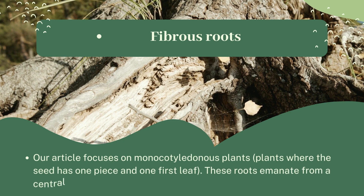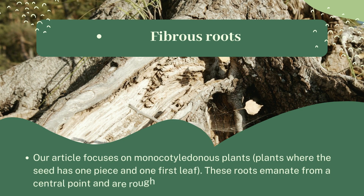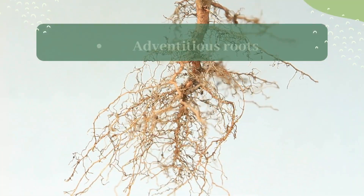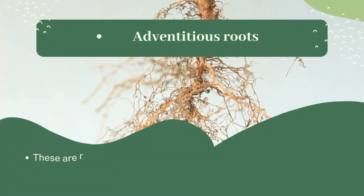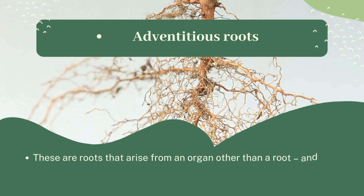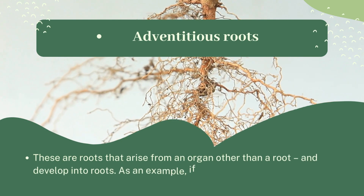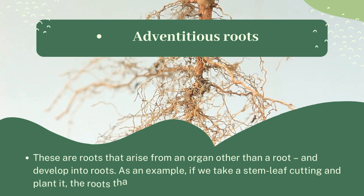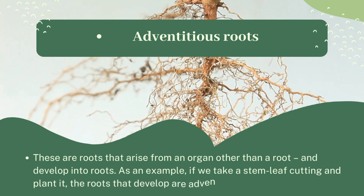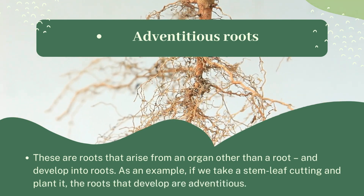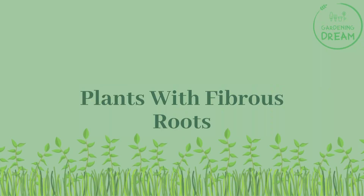Fibrous roots are found in monocotyledonous plants — plants where the seed has one piece and one first leaf. These roots emanate from a central point and are roughly equal in length. Adventitious roots are roots that arise from an organ other than a root. For example, if we take a stem or leaf cutting and plant it, the roots that develop are adventitious.